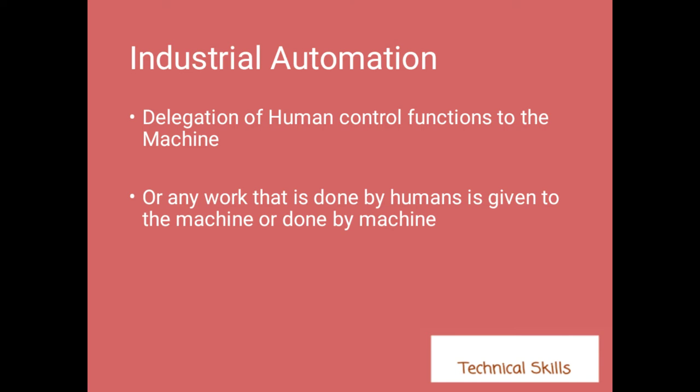Automation is whatever functions we are doing manually that we have now given to the machines. For example, earlier we used to wash clothes by hand — now we have a washing machine. We have many such examples in daily life. In industries, earlier we used levers to carry loads, but now we have conveyors. Even for mixing and cutting we have machines.